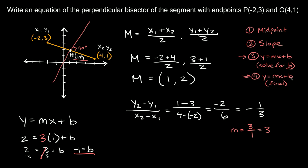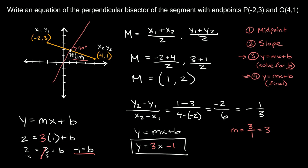Now that we know b, we can write the final equation using the slope-intercept formula y = mx + b. We know the slope is 3 and b is negative 1, so the equation of the perpendicular bisector is y = 3x minus 1.